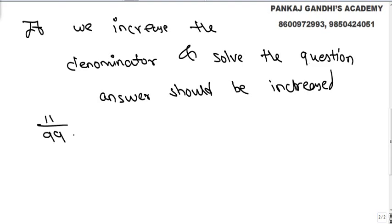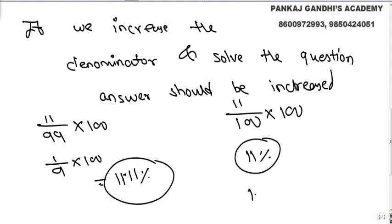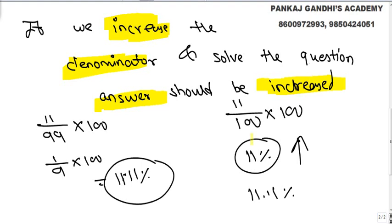For example, we are supposed to solve 11 by 99 into 100. We know it is 1 by 9 into 100, which is 11.11 percent. But if someone increases the denominator and gets 11 percent, to get the actual answer, this answer should be increased. The denominator was 99 and we made it 100.